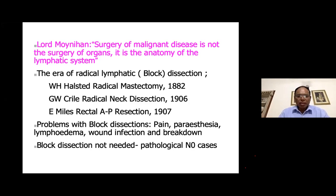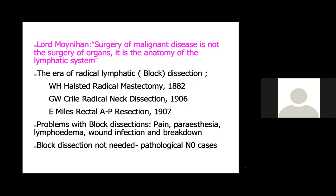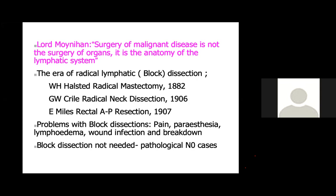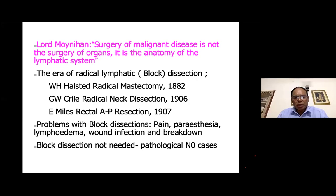He said that surgery for cancer — malignant disease — is actually the anatomical dissection of the regional nodal lymphatic basin. This was based on the work of Rudolf Virchow, who had done post-mortem studies in Germany and found that most patients who died of cancer, whether breast or any other organ, almost always had involvement of the regional nodes. So cancer first goes from the primary tumor to the regional nodes and spreads from there. William Stuart Halstead then started with his radical mastectomy.